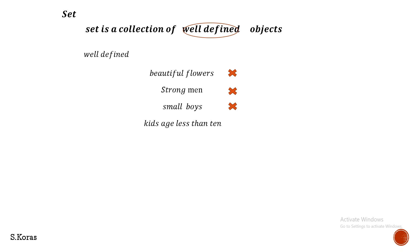Now consider 'kids aged less than 10.' This is a well-defined statement, because whenever anyone compares students by age, everyone will agree on who is less than 10 — there is no confusion. So before collecting objects into a set, we must be careful whether the elements are well-defined or not.